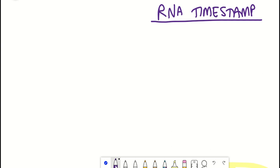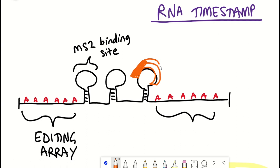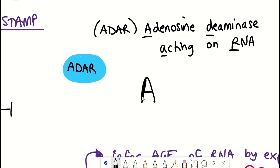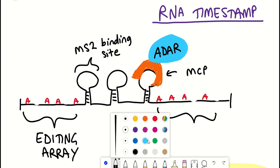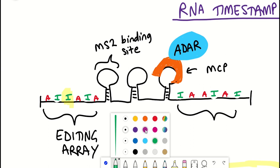Well, the lab designed recorder RNA motifs, which they call RNA timestamps. And what these motifs consist of are editing arrays, which consists mostly of adenosine molecules, along with stem loop regions referred to as MS2 binding sites that get bound by the MS2 capsid protein known as MCP. And so MCP can get fused to another protein known as ADAR, which is really important in this RNA editing technique. So ADAR, standing for adenosine deaminase acting on RNA, is an enzyme protein that is involved in the conversion of adenosine to inosine in RNA.